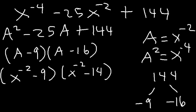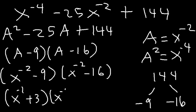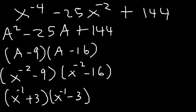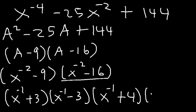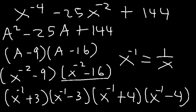We can factor this even further. Just as x squared minus 9 factors as x plus 3 times x minus 3, x to the negative 2 minus 9 factors as x to the negative 1 plus 3 times x to the negative 1 minus 3. Similarly, x to the negative 2 minus 16 factors as x to the negative 1 plus 4 times x to the negative 1 minus 4. You can replace x to the negative 1 with 1 over x, but this is the fully factored answer.